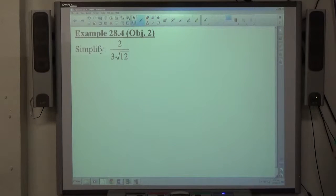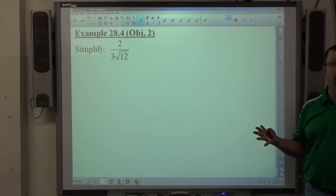Last example here: 2 over 3 times the square root of 12. This has basically the same structure as the last one did.